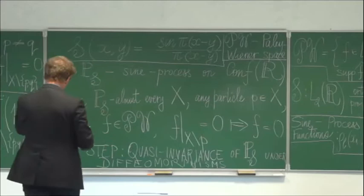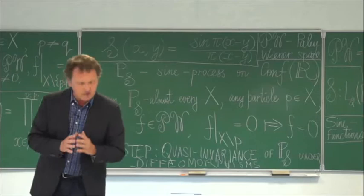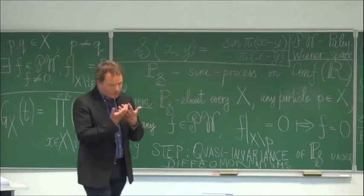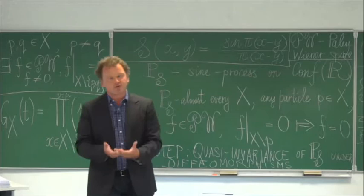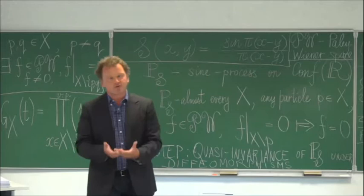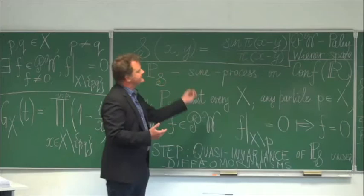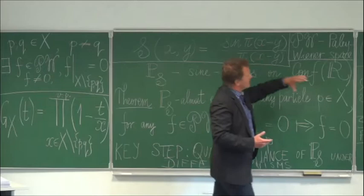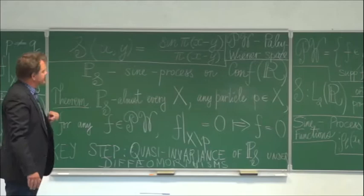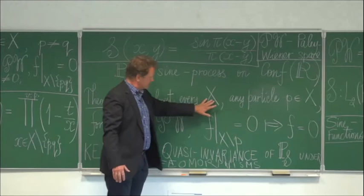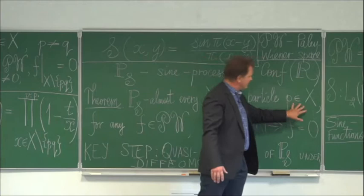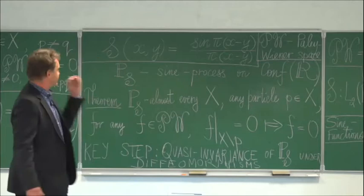It is a spectral projection corresponding to the differential operator of taking the second derivative. Let me formulate immediately the main result of the talk. The sine process is a measure on the space of configurations on the real line, that is to say, on the space of infinite subsets of the real line without accumulation points. The question is: what does a subset sampled with respect to the measure know about the underlying functional space — the Paley-Wiener space? The main result is that the random subset, with one particle removed, is in fact a uniqueness set for the Paley-Wiener space.